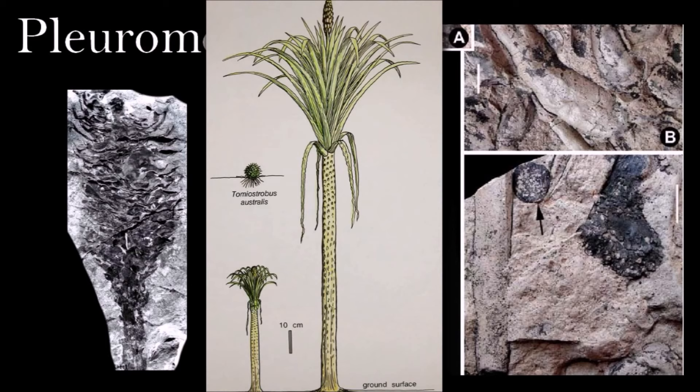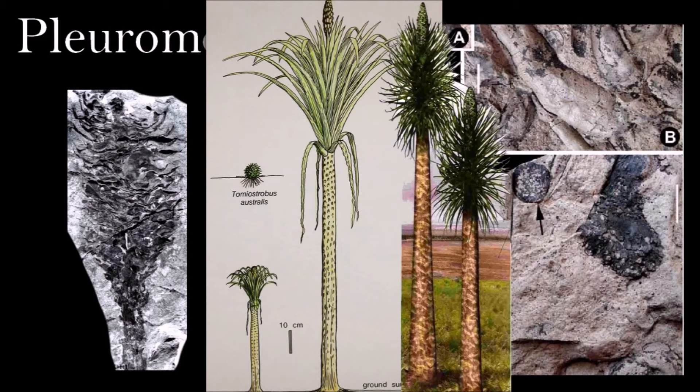Pleuromeia had a single, unbranched trunk, topped by a tuft of grass-like leaves. Its root system consisted of four bulb-shaped lobes, connected to rootlets that fanned out through the soil. Pleuromeia reproduced with spores from cones. Some species produced several cones, but many had just one on top of the stem.